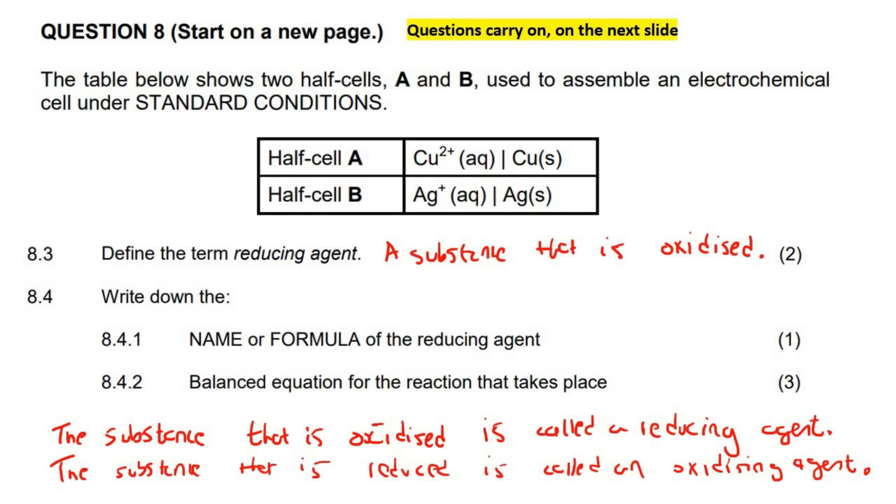Next one, write down the name or formula of the reducing agent. We've got to go find these two things on that table now. And now remember that I typically show table 4B. Well, I always show table 4B. Whereas some of you, maybe one out of every 50 of you, may be using table 4A at school. I've been teaching for quite a while, and I've only ever seen students using table 4A like once. Most schools use table 4B.